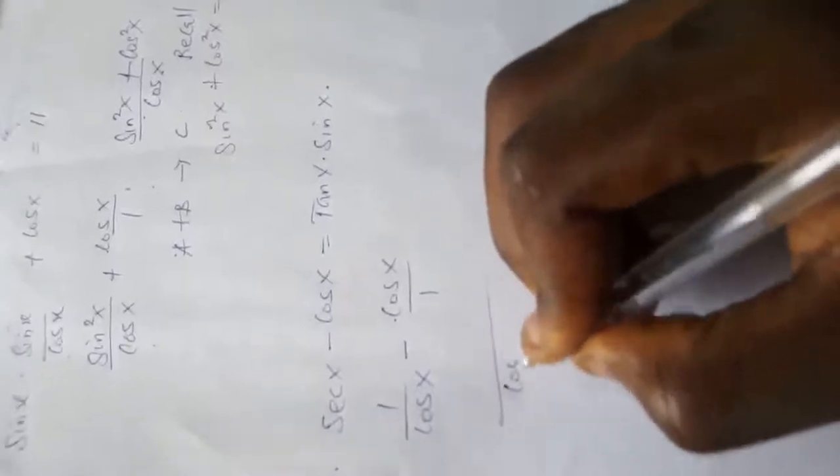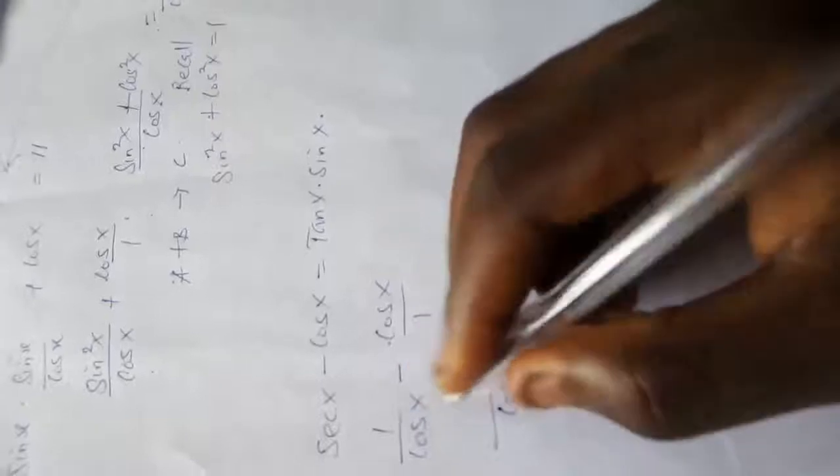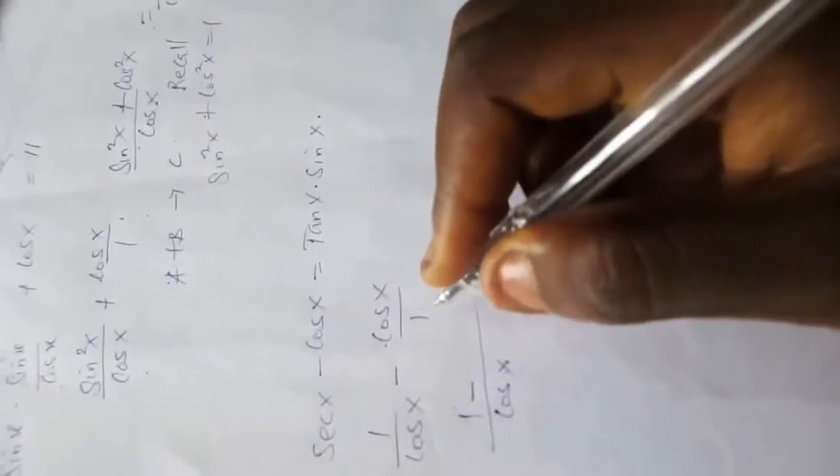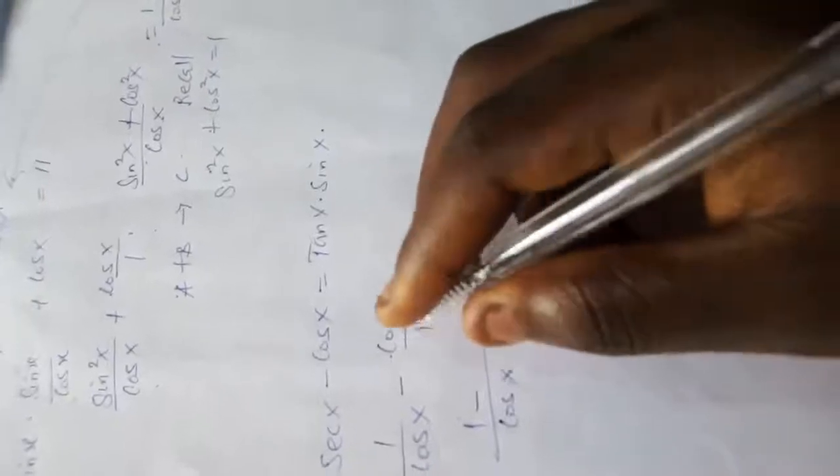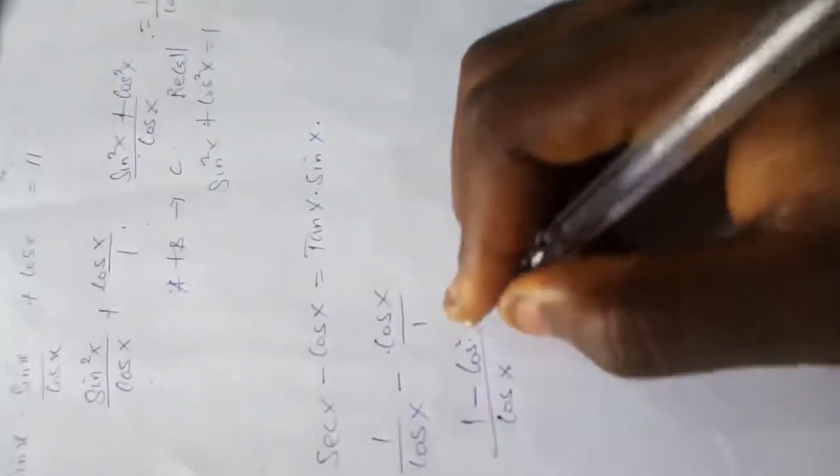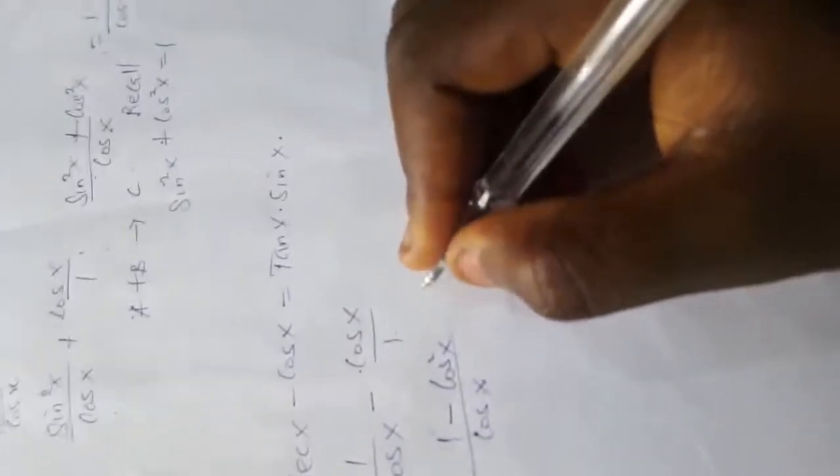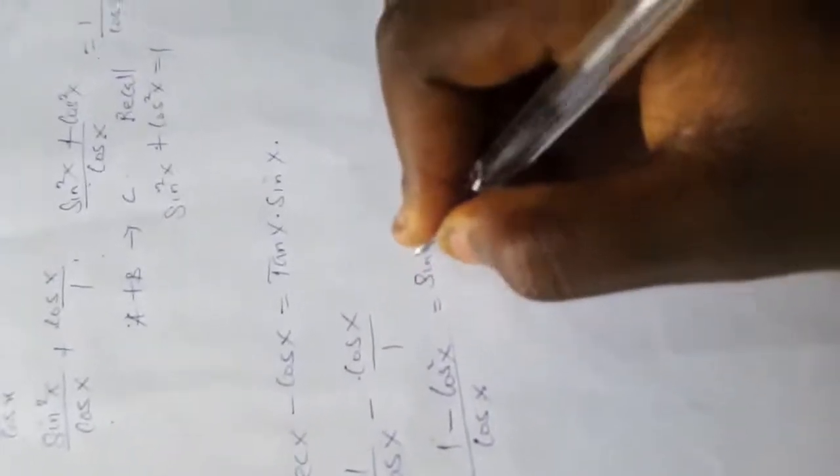Cos x divided by cos x is 1, 1 times 1 is 1, minus cos x divided by 1 is cos x. Cos x times cos x is cos square x. So this equals sine squared x over cos x.